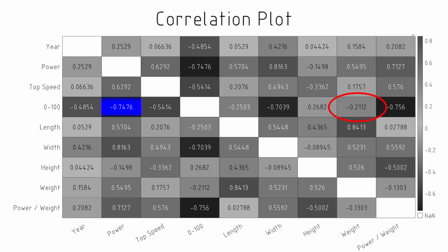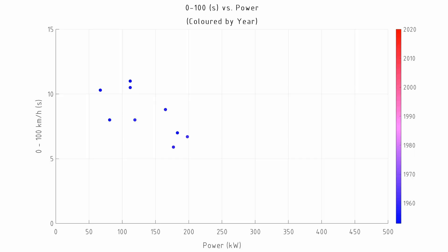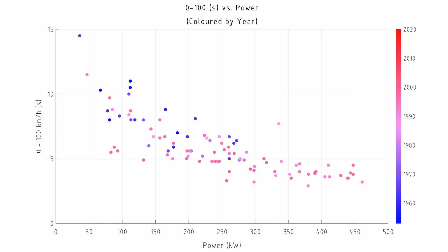Surprisingly, weight is quite a bit down the list. In this graph we see the 0 to 100 time versus power, and we can clearly see that as power is increasing the 0 to 100 time decreases. It's relatively clear that this is not a linear relationship and there are diminishing returns as the power continues to increase.